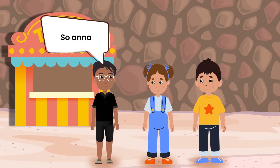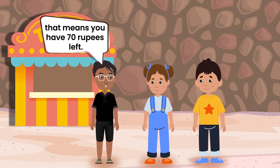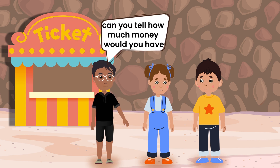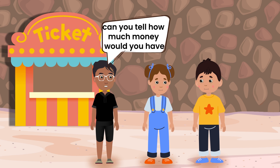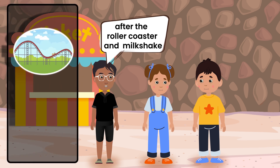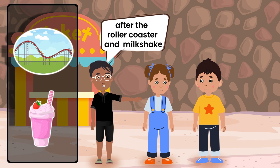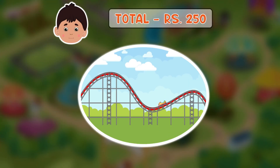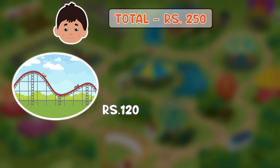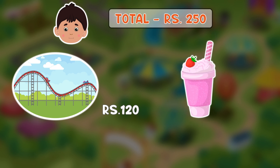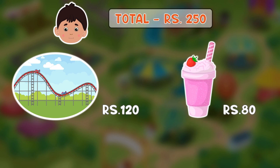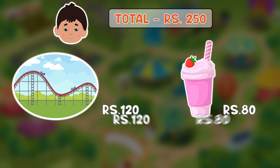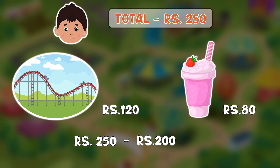So, Anna, this means that you have 70 rupees left. Now, Peter, can you tell me how much money would you have after the roller coaster and the milkshake? Sure, Banu. The roller coaster ride costs 120 rupees and the milkshake costs 80 rupees, which in total is 200.